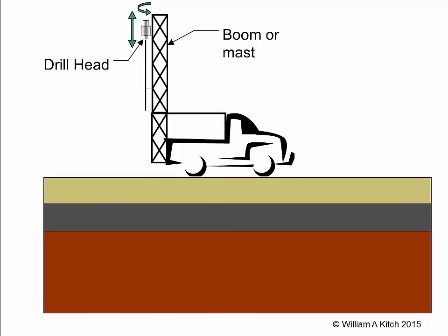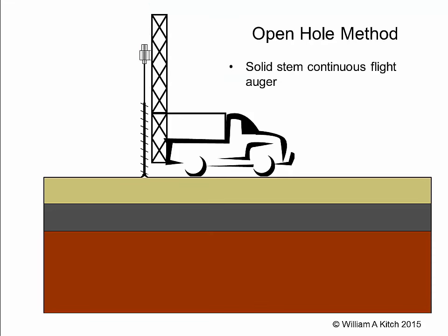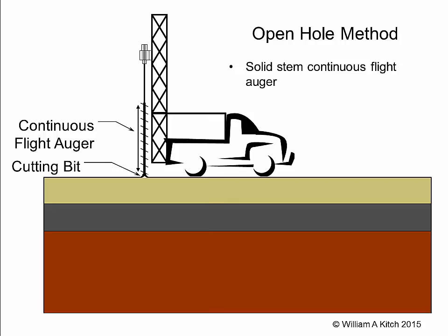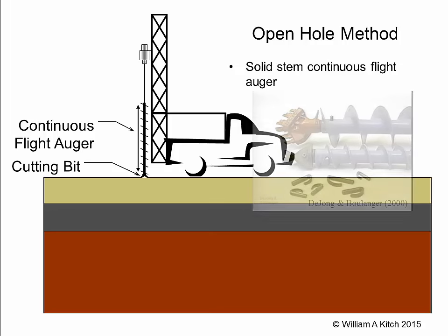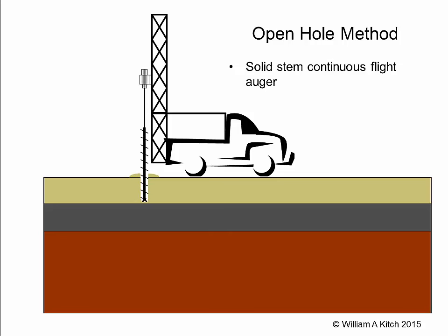One of the simplest drilling techniques is the open hole method using solid stem continuous flight augers. The flights on a continuous flight auger run the full length of the auger, and at the tip is a cutting bit. The inset photo shows two different diameter solid stem augers with two different types of cutting bits. The auger is rotated and pushed into the ground by the drill head. The bit loosens the soil at the bottom of the hole and the flights carry the cuttings to the ground surface. An engineer or geologist can estimate when new soil layers are encountered by observing changes in the cuttings. These cuttings can be collected as bulk samples; however, they are low quality samples because they are completely disturbed by the cutting process and because soil from the upper layers can contaminate soil from the lower layers as the cuttings are carried up the auger flights.